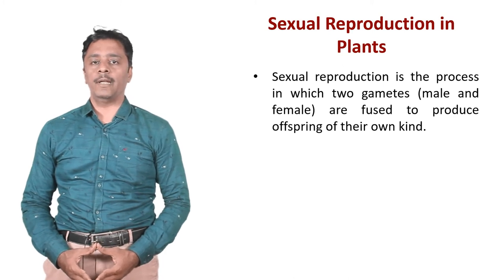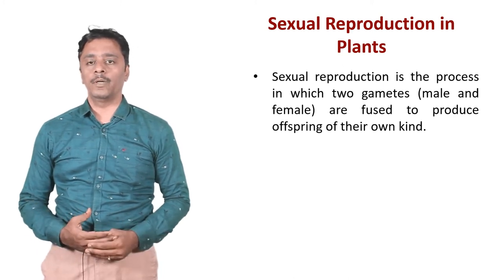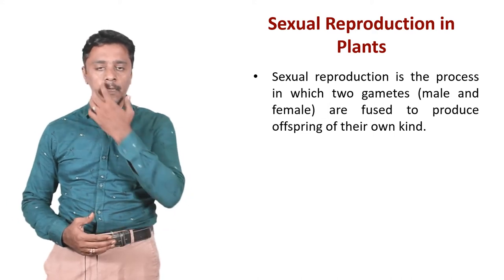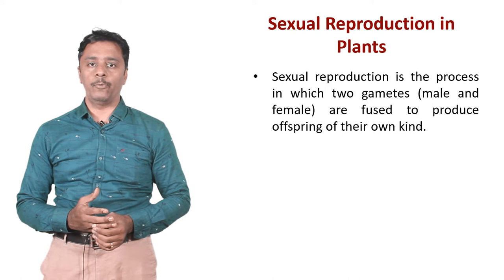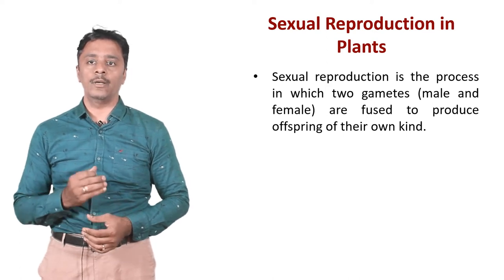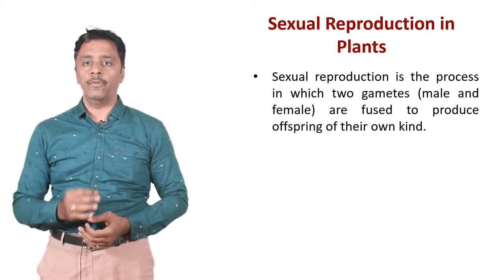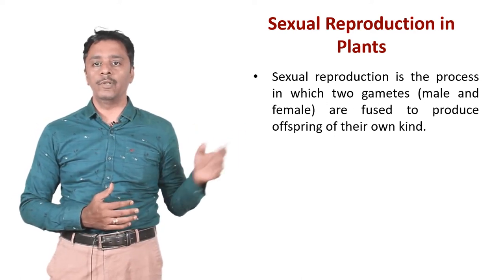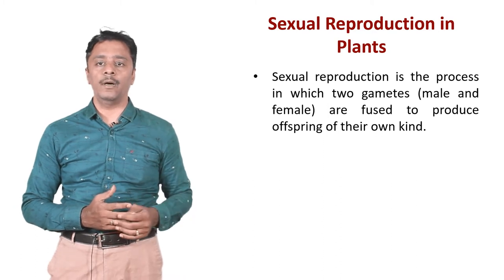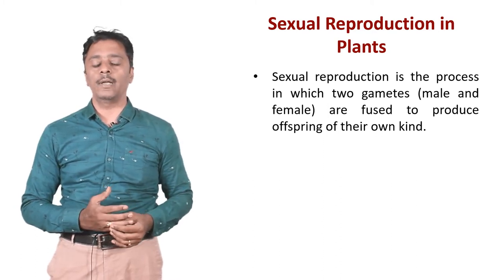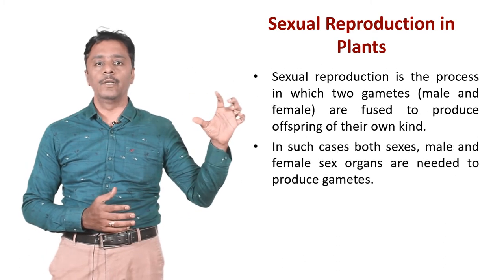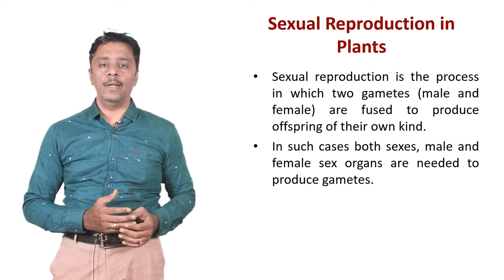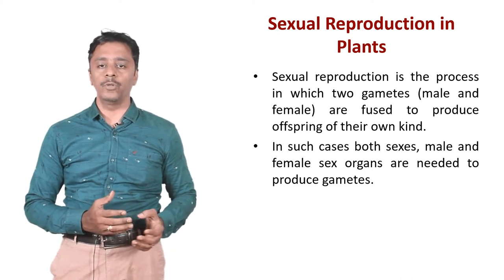Now we are going to see about sexual reproduction in plants. This is an important two-mark question. Sexual reproduction is a process in which two gametes, male and female, are fused together to produce offspring of their own kind. In such cases, both male and female sex organs are needed to produce gametes. The flower is a reproductive organ of a flowering plant. To understand this further, we need to study the structure of a flower.